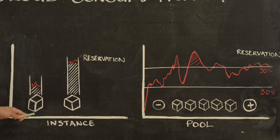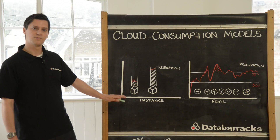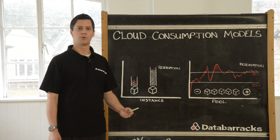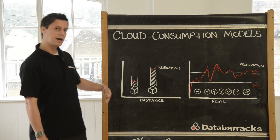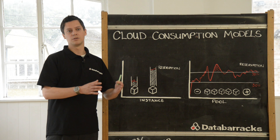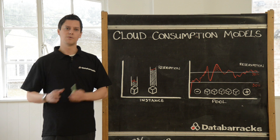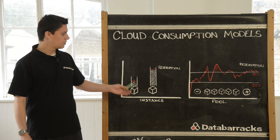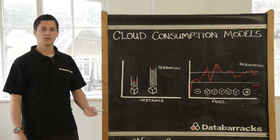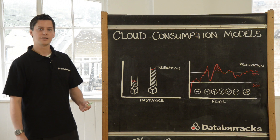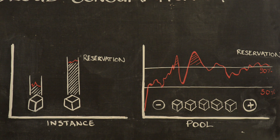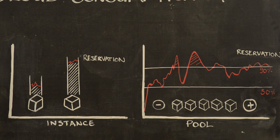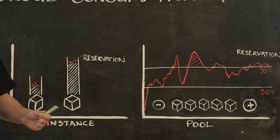If we look at the instance-based model first, it is based upon an individual virtual machine and you pay for resources on a virtual machine by virtual machine basis. With a pay-as-you-go or unreserved model, that's a consumption model where you pay per unit over time — so a cost per gigahertz, cost per gigabyte, cost per IOPS.